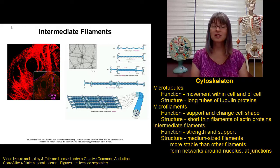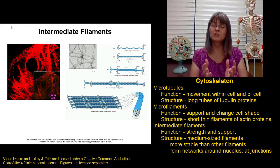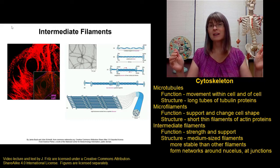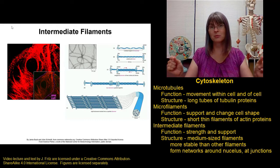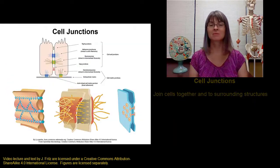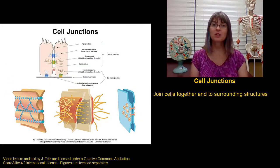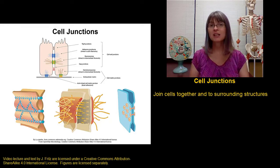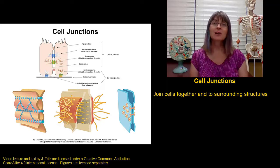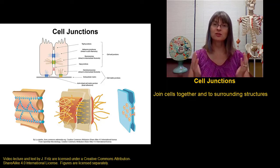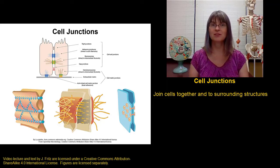We find intermediate filaments in a network around the nucleus and also at junctions between cells, where they're important for holding cells together. In multicellular organisms like humans, it's important that we can join cells together or keep cells connected to the structures around them. Cell junctions are the structures that hold cells together or to the environment.